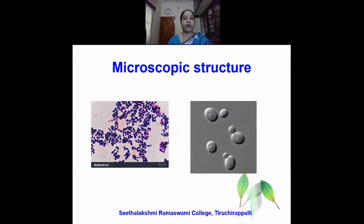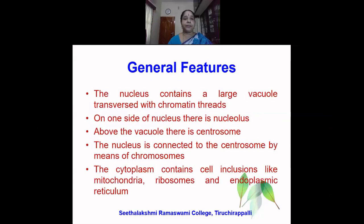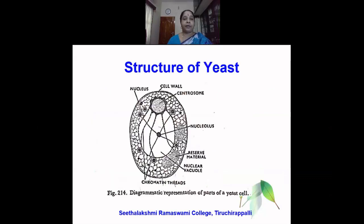This is the microscopic structure of the yeast cells. The nucleus of the yeast contains a large vacuole which is traversed with chromatin threads. On one side of the nucleus, there is a nucleolus. Above the vacuole, there is a centrosome. The nucleus is connected to the centrosome by means of the chromosomes. The cytoplasm contains cell organelles or cell inclusions like mitochondria, ribosomes, and endoplasmic reticulum. We find here the nucleus of the yeast, wherein we have the nucleus, nucleolus, the centrosome, the nuclear vacuole, and also the chromatin threads as found under the electron microscope.